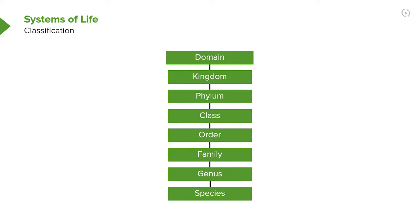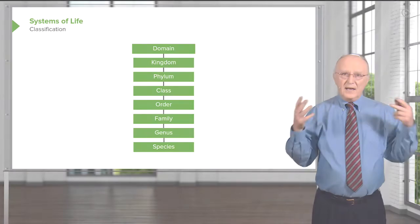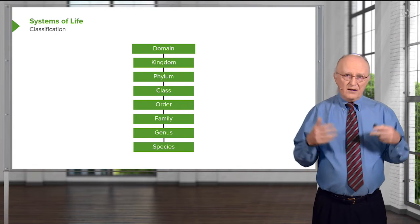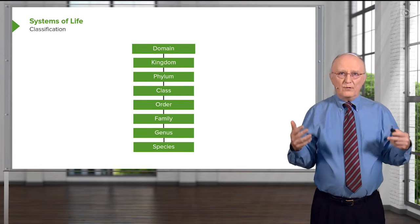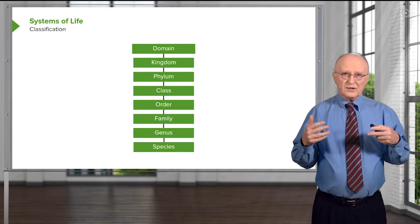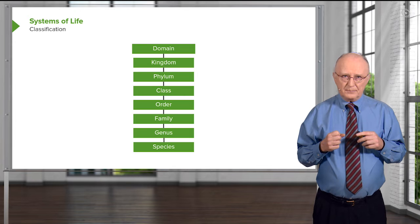Domains relate to the very broad regions relating to living systems. Kingdoms are a subdivision of that, and phyla are a subdivision of the kingdoms, followed by class, order, family, genus, and species. It's important to recognize that every life form on earth can be described by this hierarchical system.